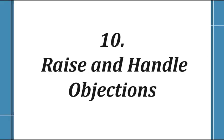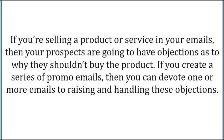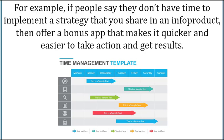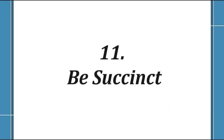Number 10: Raise and handle objections. If you are selling a product or service in your emails, your prospects are going to have objections as to why they shouldn't buy. If you create a series of promo emails, you can devote one or more emails to raising and handling these objections. For example, if people say they don't have time to implement a strategy you share in an info product, offer a bonus app that makes it quicker and easier to take action and get results.